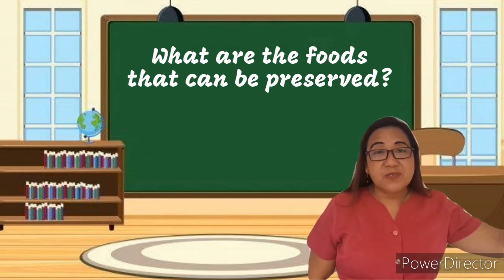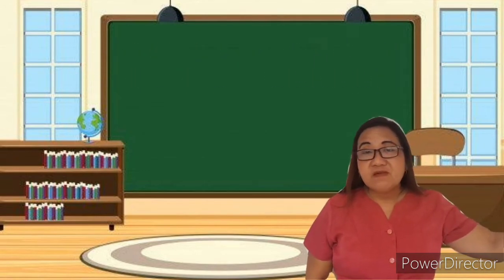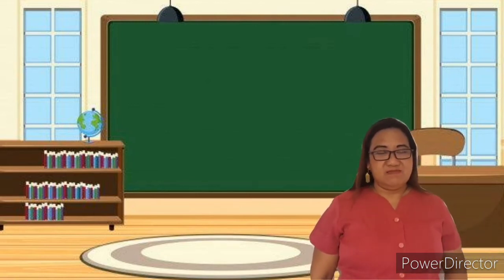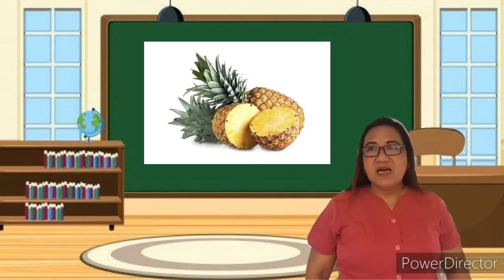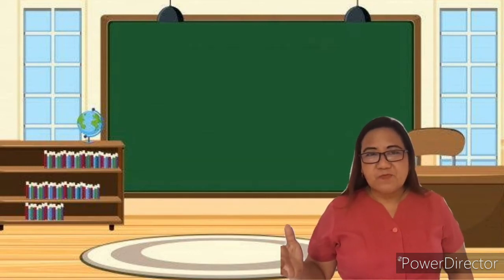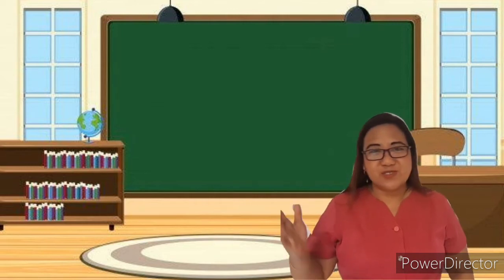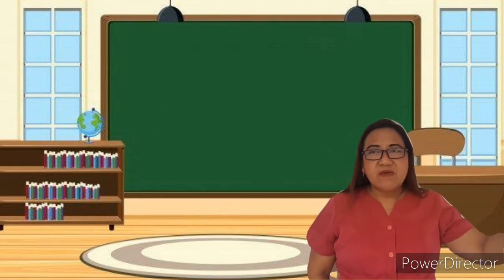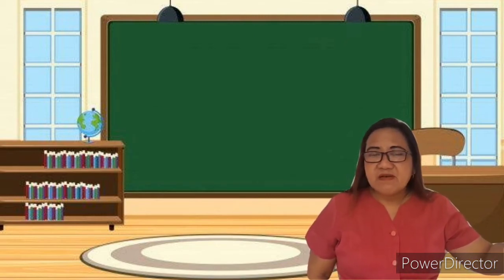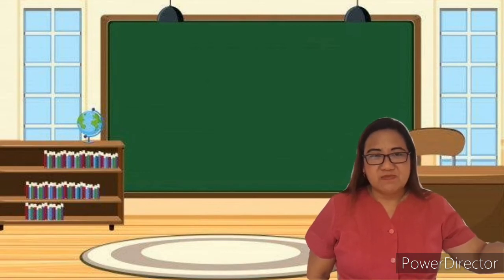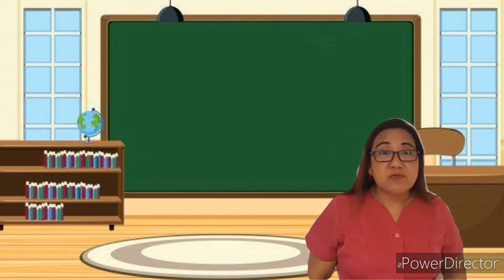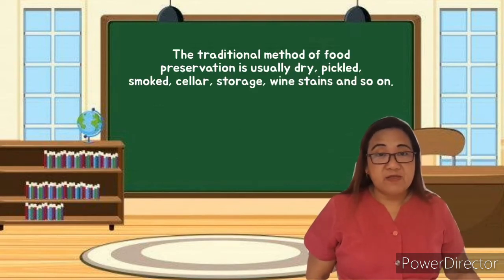Who among you knows any food? Ayesha — very good! Fine, apple. How about you, Trisha? Very good, Trisha — it's an egg. How about you, Ralph? Good answer! Do you have any idea how best these foods are prepared — the foods you mentioned a while ago?